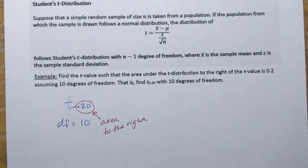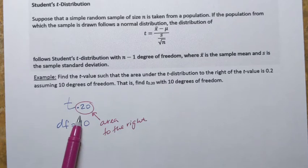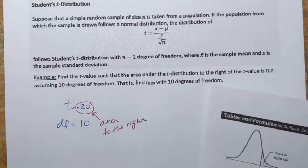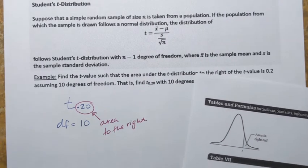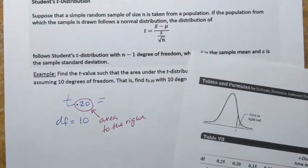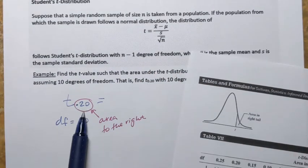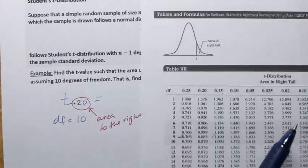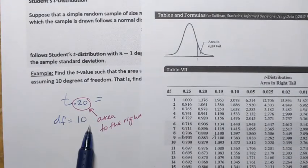But in the case of the t-distribution, that's a good thing because our table is set up in terms of areas to the right. So now with this given information to use the table or to find what t equals using the table, I have to find the following area in the top row and the following degree of freedom in the first column.